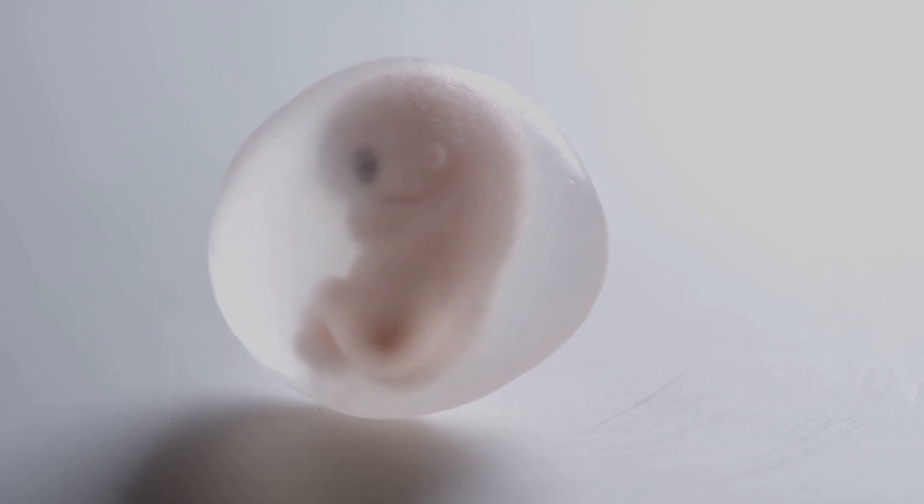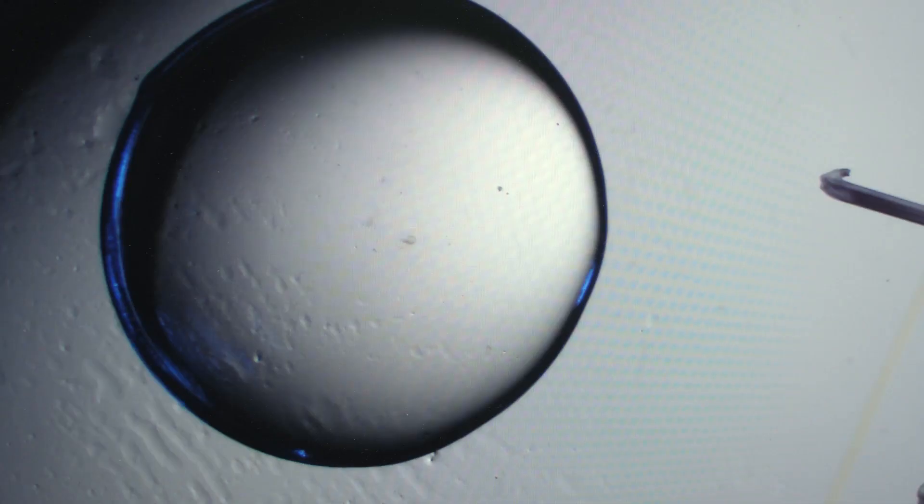Chapter four: implantation, the great escape. All right, so we've got our blastocyst, this little ball of potential just vibing in the uterus. But here's the catch: it can't just chill there forever. It needs to find a place to call home, a cozy spot to burrow in and grow.